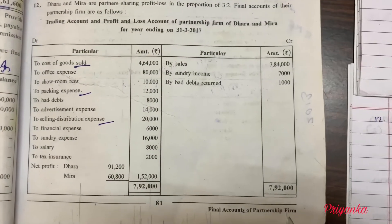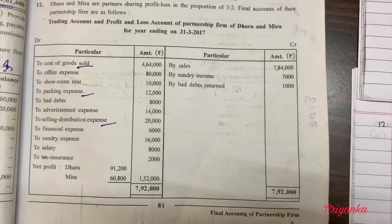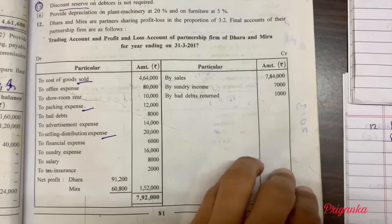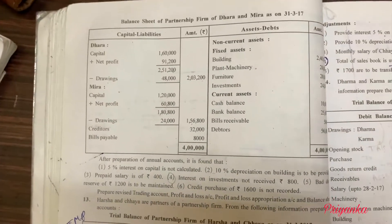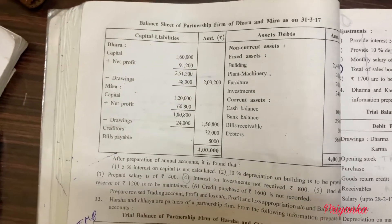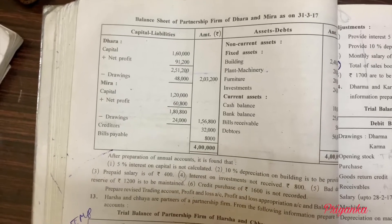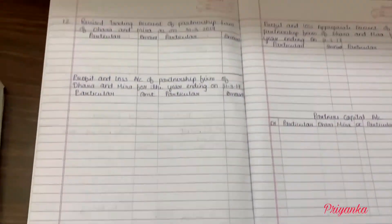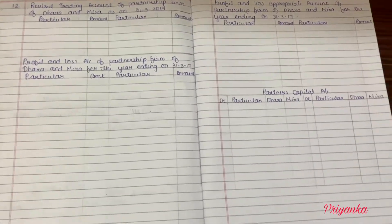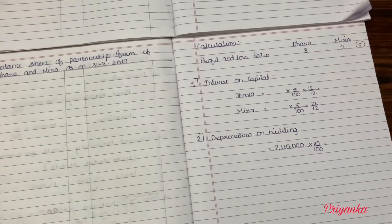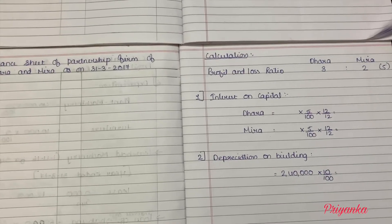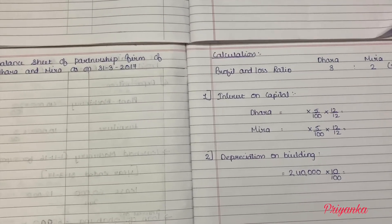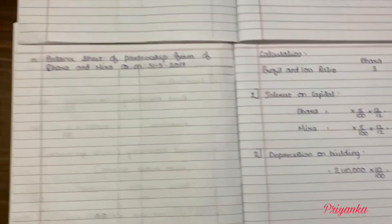Question number 12 gives a trial balance. We have the trading account, profit and loss account, balance sheet, and adjustments. In the balance sheet, only the capital account is given. I am ready with the specimen — the revised trading account — and other specimen with calculation. The profit and loss ratio given for the partners is 3 to 2. Now let's start with the calculation of adjustments.